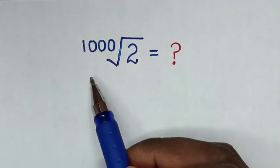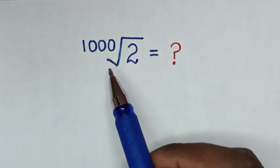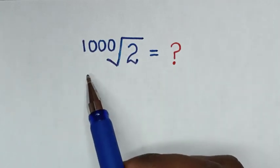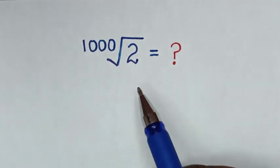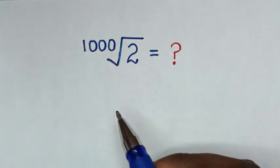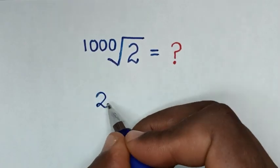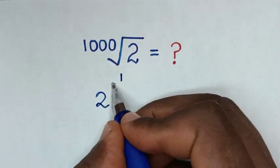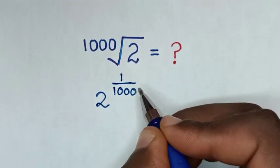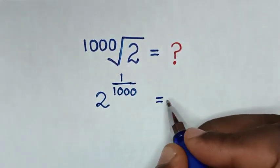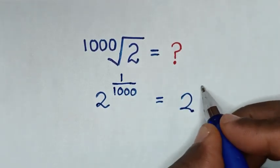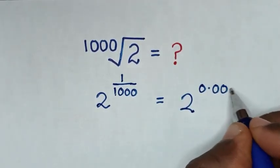Hello, how to solve this math problem of 1000th root of 2 without using a calculator. The 1000th root is the same as 2 to the power of 1 over 1000. It will be equal to 2 to the power of 1 over 1000, which is 0.001.